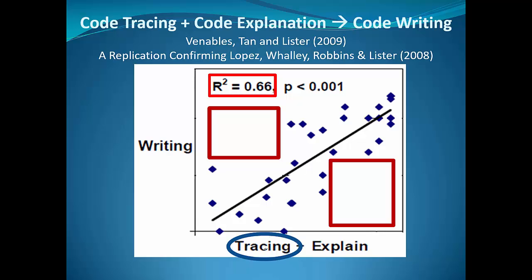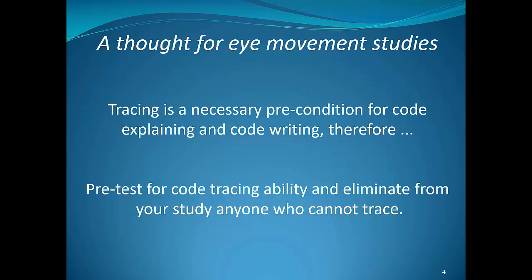The first point I want to make with respect to eye tracking studies is related to tracing. I don't think there's a lot of point in doing eye movement studies on students who cannot trace code. To study the eye movements of such students is a bit like studying the swimming style of a drowning person. The student is just overwhelmed. There's no real cognitive process going on, there's just panic. That's what you'll find in the eye movement data.